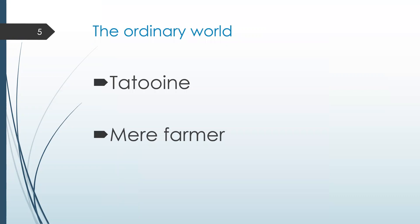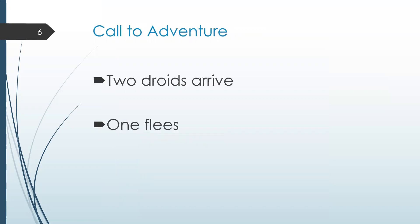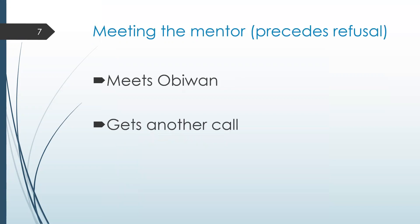In the ordinary world on Tatooine, Luke is a farmer living with his aunt and uncle. A call to adventure comes when R2-D2 and C-3PO arrive; R2 flees and Luke must get him back before his uncle finds out. Meeting the mentor precedes the refusal of the call — in searching, Luke gets hit over the head and meets his mentor, Obi-Wan Kenobi. He gets another call from Obi-Wan to adventure: he must learn the Force and follow in his father's footsteps, beginning Luke's father quest, which plays out more so in the other films.